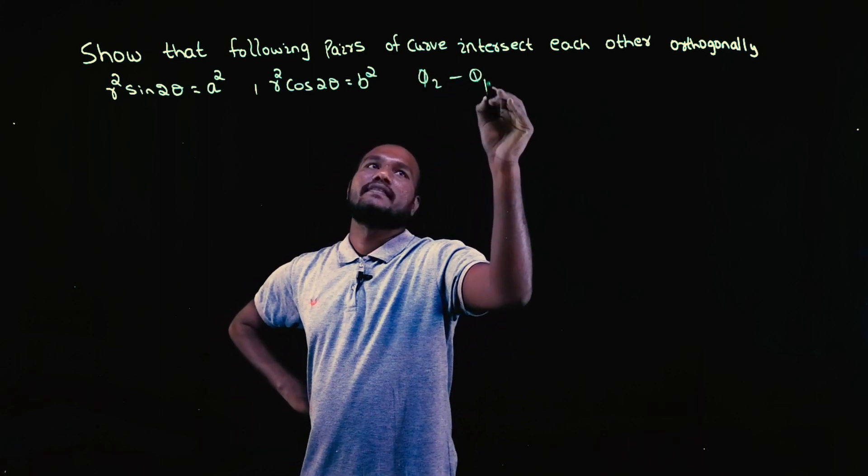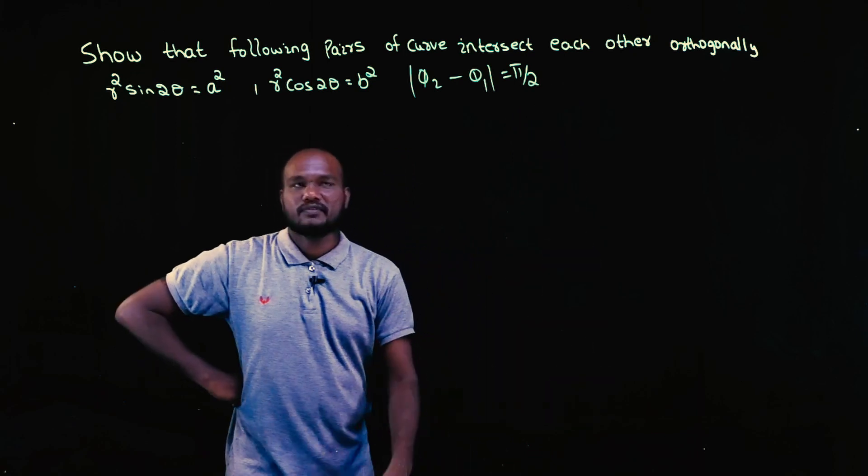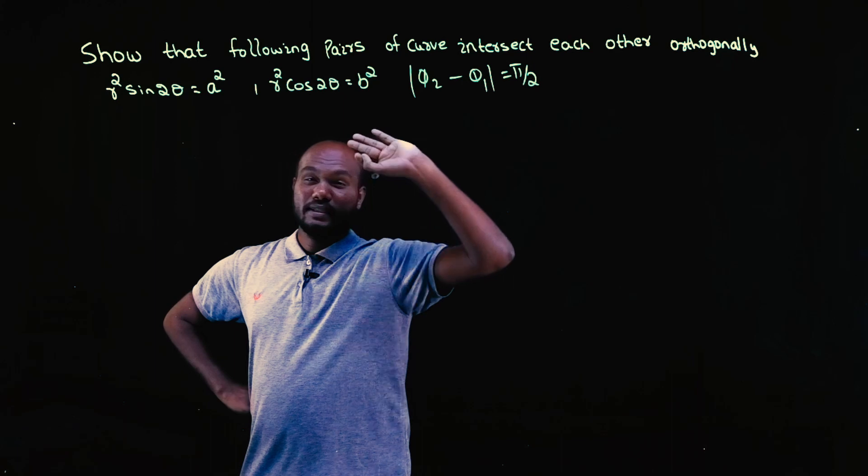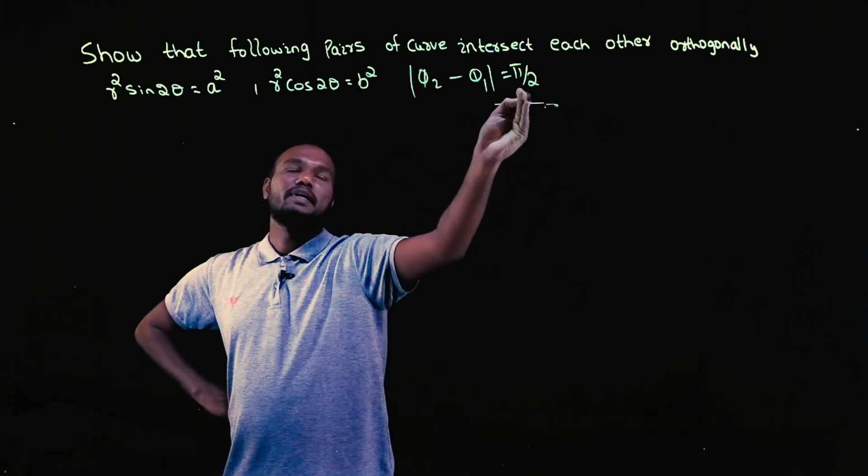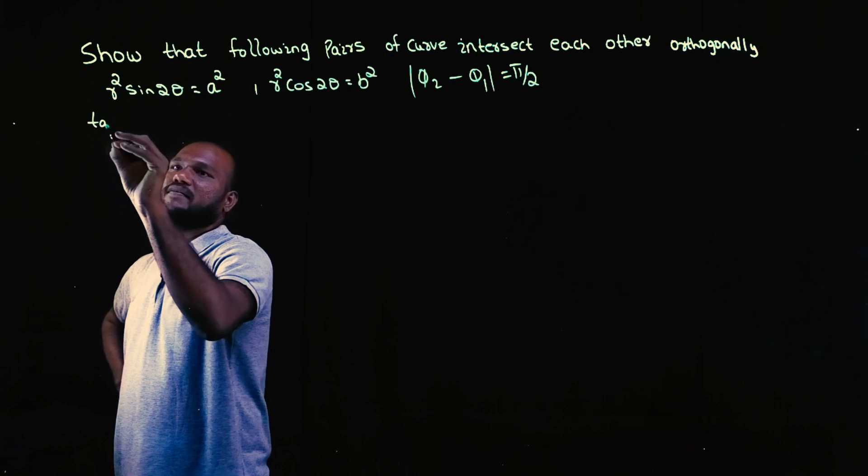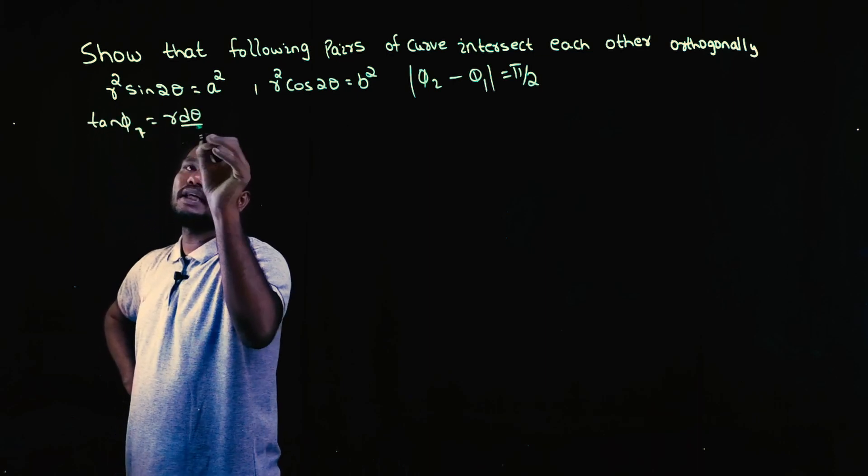We have to find φ2 minus φ1 is equal to π by 2. What is φ2? Angle between radius vector up to this and angle between radius vector of the first one. That the angle between those should be equal to π by 2. So how to do that? To find φ1 we have to find tan φ1. How much is that? r into dθ by dr.